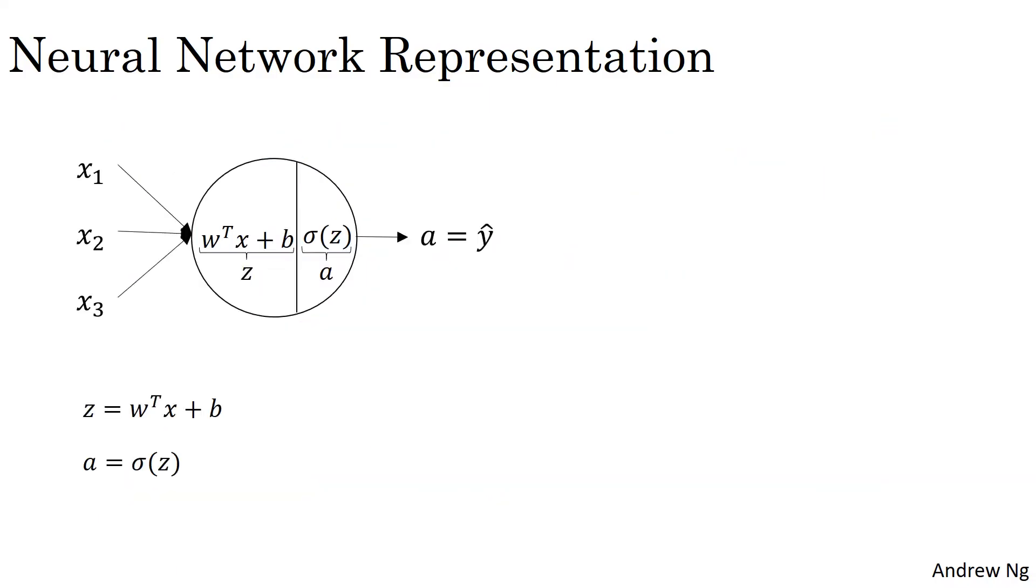Now, we've said before that logistic regression, the circle in logistic regression really represents two steps of computation. First, you compute z as follows, and then second, you compute the activation as a sigmoid function of z. So a neural network just does this a lot more times.